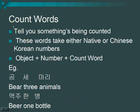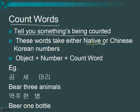The most important topic: count words. Count words tell you something is being counted, and they're used in Chinese and Japanese as well. This is where you'll see numbers most often in Korean, so it's essential you know this. These words take either native or Chinese Korean numbers — you'll have to make the distinction because one is wrong and one is right. The structure is: object, number, count word.